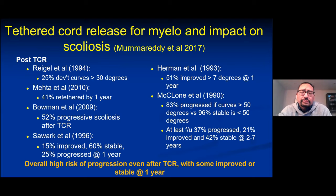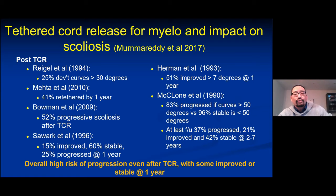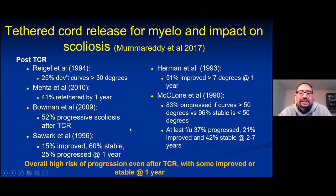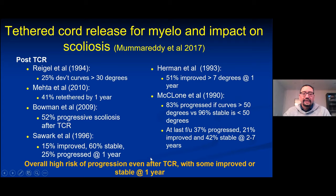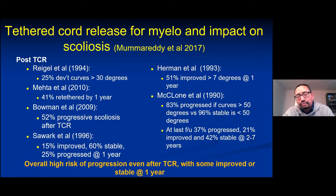Mumoretti's 2017 review summarized the limited literature on tethered cord release and scoliosis deformity. The Mets paper suggested 41% of patients re-tethered within a year of de-tethering. Bowman's prospective and retrospective studies suggested about 50% had progressive deformity after release, while other papers — Herman, Swarik — showed some improvement. Overall, there's a very high risk of progression even after tethered cord release, with most improvement data limited to one year. Sustained benefit at two to three years is probably less likely.